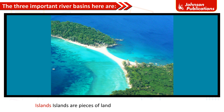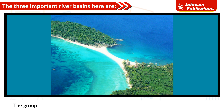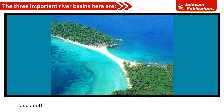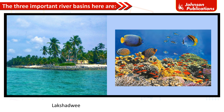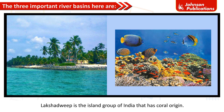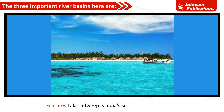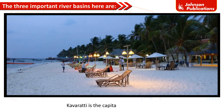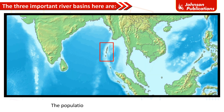Islands are pieces of land surrounded by water on all sides. There are two groups of islands in India. The group of islands in the Bay of Bengal are called the Andaman and Nicobar Islands, and another group in the Arabian Sea is called the Lakshadweep Islands. Lakshadweep is located off the coast of Kerala and is the only island group of India with coral origin. It is India's smallest union territory, with Kavaratti as its capital and a population of approximately 65,000.